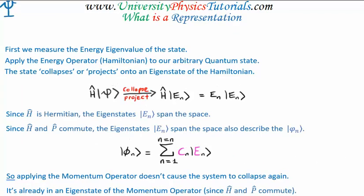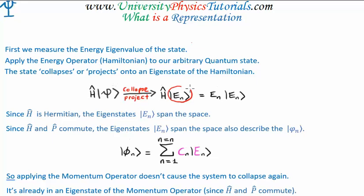How do we do this? First of all, we're going to measure the energy eigenvalue of the state psi, which is very straightforward — we've already done it. We apply the energy operator, the Hamiltonian, to our arbitrary quantum state. This collapses the quantum state onto an eigenstate of the Hamiltonian. The system will decide what energy it's in by collapsing into an eigenstate associated with that particular energy.